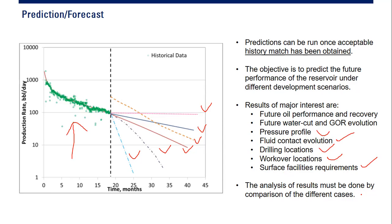The analysis of results must be done by comparison of different cases. We create several cases and scenarios and do risk assessment and economical analysis. For example: Case 1 — drill 10 wells; Case 2 — enhanced oil recovery; Case 3 — no new activity, just produce; Case 4 — combination of drilling and water flood. We compare these cases to find which gives the best and most economical result.